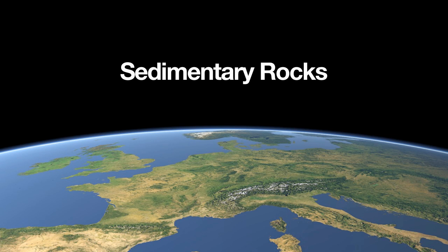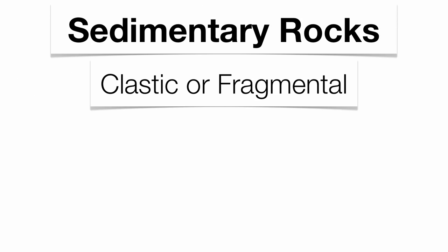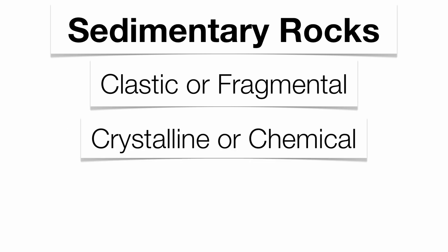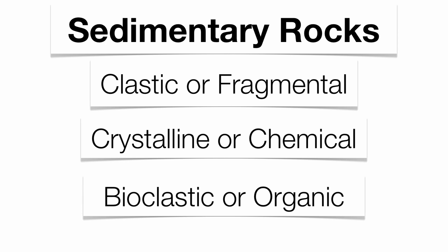There are actually three types of sedimentary rock that we're going to talk about. The first type are rocks made of other rock fragments — they're called clastic or fragmental. Next we're going to talk about rocks made through chemical precipitates or chemical evaporites — they're called crystalline or chemical rocks. And finally, rocks made from dead plants and animals are called bioclastic or organic rocks.